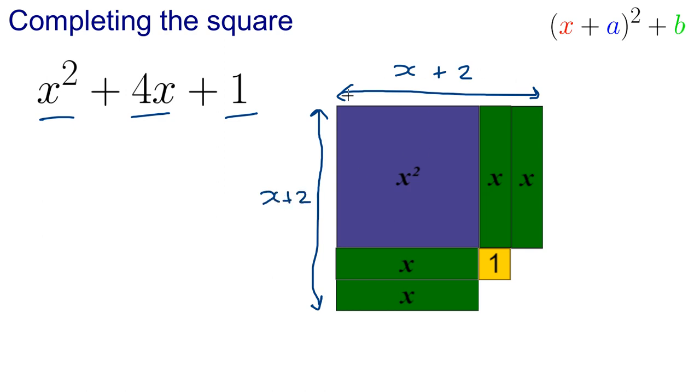So if I had a complete square there, that would be x plus 2 all squared, because it's x plus 2 multiplied by x plus 2. But actually, I don't have the whole square here. What I've got is a bit missing.